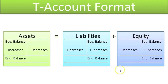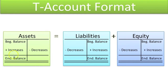We'll learn about how liabilities and equity track that on the right-hand side. As you can see here, assets are on the left-hand side of the balance sheet equation. Therefore, the beginning balance and increases and ending balance will normally be on the left and the decreases on the right. Liabilities and equity, since they're on the right-hand side of this equation, the beginning balance will be on the right-hand side with increases also on the right-hand side and decreases on the left.